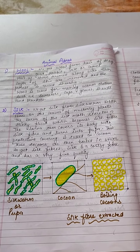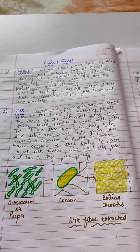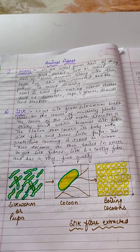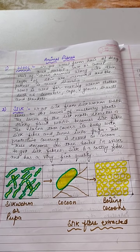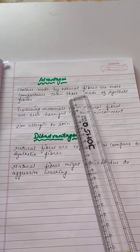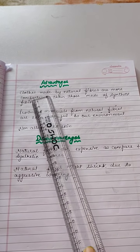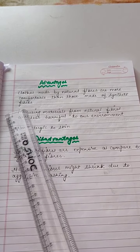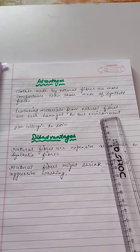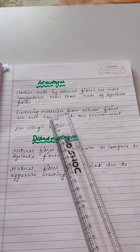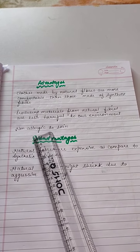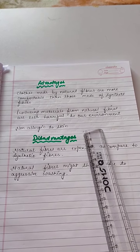So natural fibers are of two types: plant fiber and animal fiber. Plant fibers consist of cotton, jute, and coir, whereas animal fibers consist of wool and silk. Now let's discuss the advantages and disadvantages of natural fibers. Clothes made from natural fibers are more comfortable than those made of synthetic fiber, as cotton absorbs sweat. Producing material from natural fibers is less harmful to our environment, and natural fibers are non-allergic to our skin.